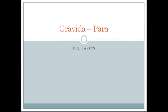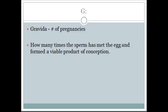Let's talk about gravida and para. I'm just going to touch on the basics, and then we're going to use a lot of examples to drive the point home. The gravida is simply the number of pregnancies that a woman has had in her lifetime. If she's currently pregnant or has had prior pregnancies, those will be counted — the number of times that sperm and egg have met to form a viable product.